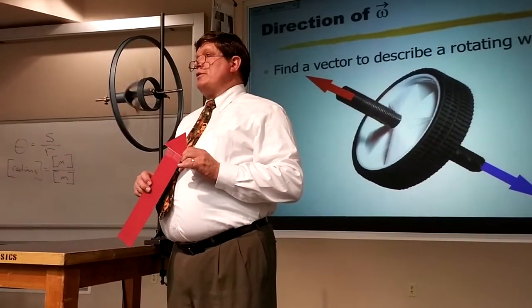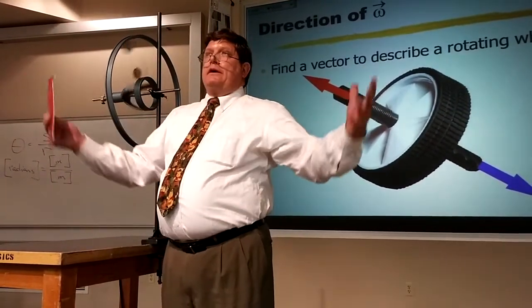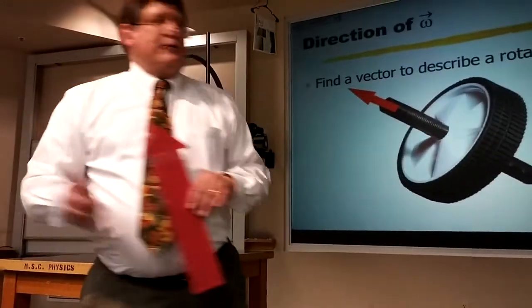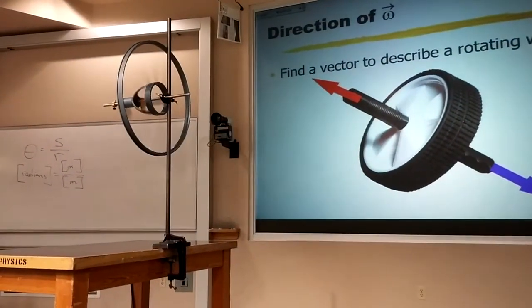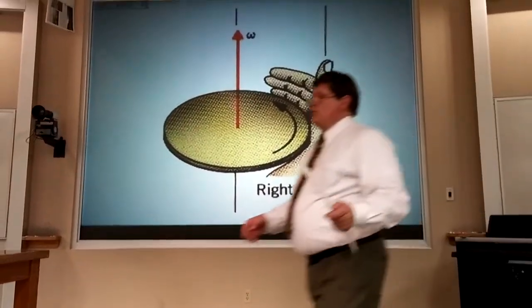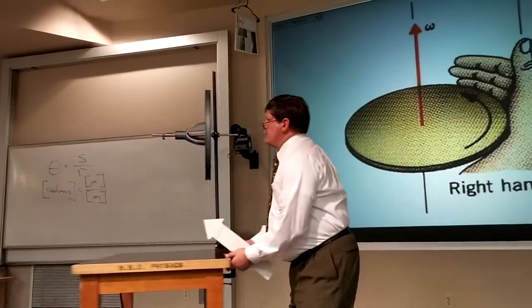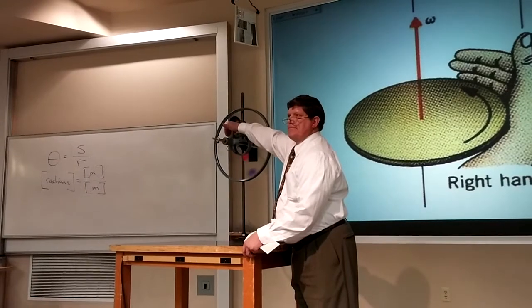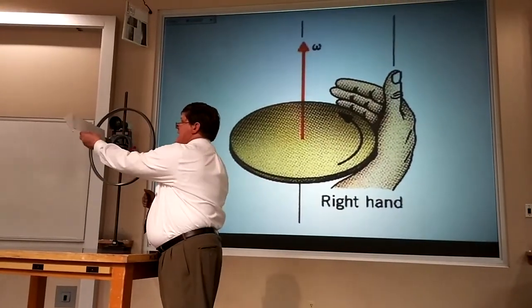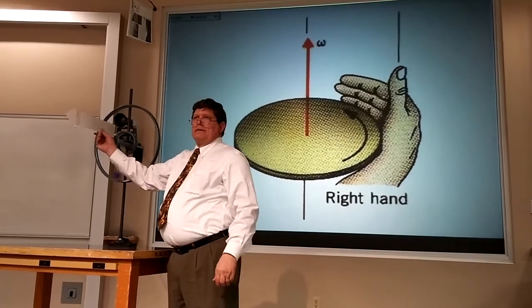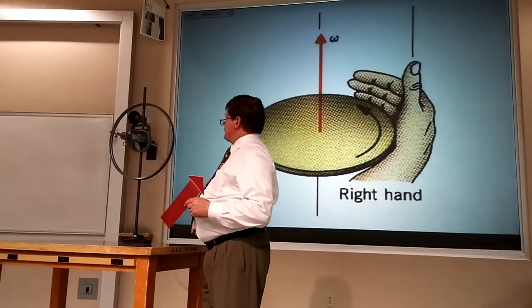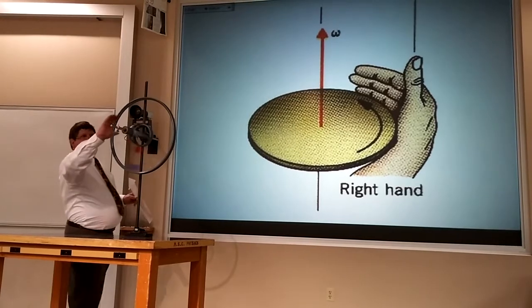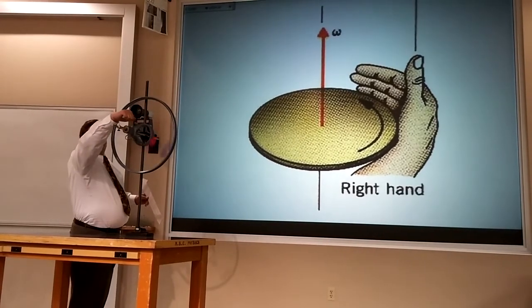Well, it turns out the decision was made many, many years ago by a group of dead white physicists, and it turns out that everyone in the room was right-handed. And so they came up with something called the right-hand rule. With the right-hand rule, what we do is we curl the fingers of our right hand in the direction the wheel is rotating. Our right thumb is pointing along the axis in the direction of the omega vector. So if I rotated it about the axis that way, I would have to use my right hand, rotate my fingers in the direction it's spinning, my thumb would now...